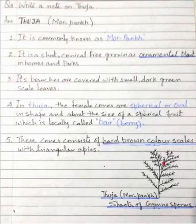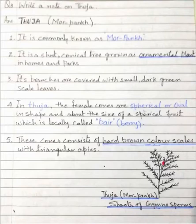Write point number one: it is commonly known as 'more punk.' Write with the black marker. Then write number two: it is a short conical tree grown as an ornamental plant in homes and parks.